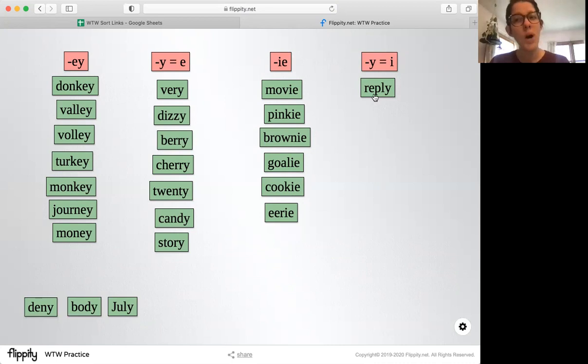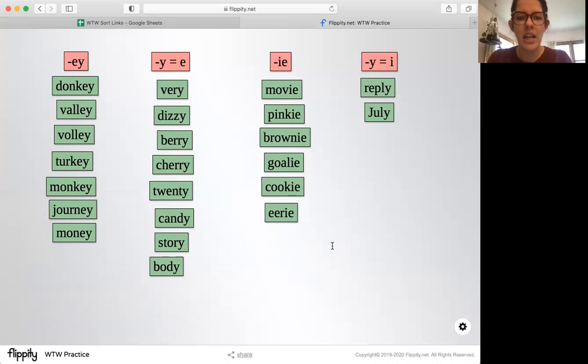So sometimes when words end in y, it makes an i sound rather than an e sound like July. Here our word ends in y. This word is body, so we put it in this category. Our last word is deny. It ends with a y, and it sounds like an i. So that would go here.